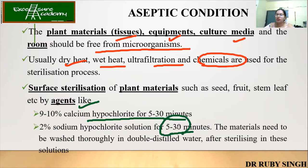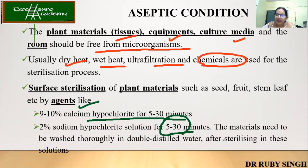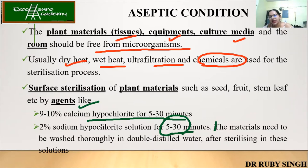This 5 to 30 minutes varies. If it is a flower or very delicate plant tissue you are taking, then keep it for 5 to 10 minutes. If you are using roots, stems, or internodes, then keep it for a longer time. After sterilizing, the materials need to be washed thoroughly in double distilled water to remove the presence of sodium hypochlorite and calcium hypochlorite from the surface of the plant tissue; otherwise it is going to interfere in the upcoming steps of plant tissue culture.